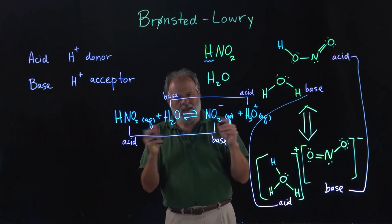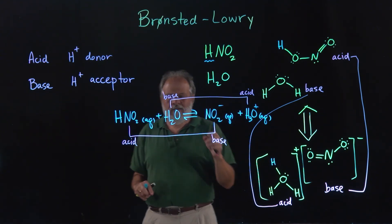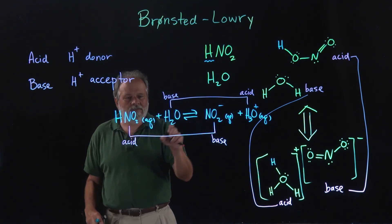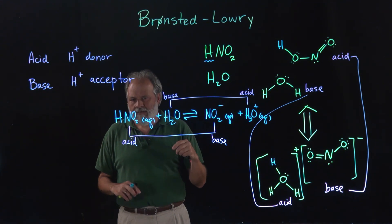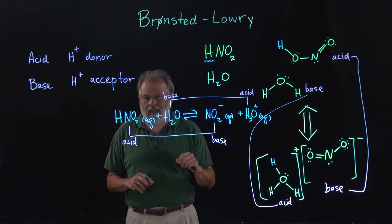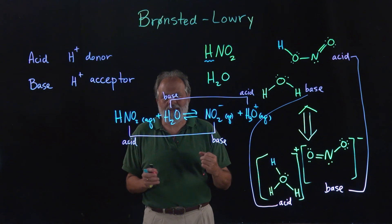Now once we have an equilibrium, you should be able to write an equilibrium constant. The equilibrium constant for this particular reaction of an acid in water is called Ka, the acid ionization constant. We'll talk more about that when we work some problems.